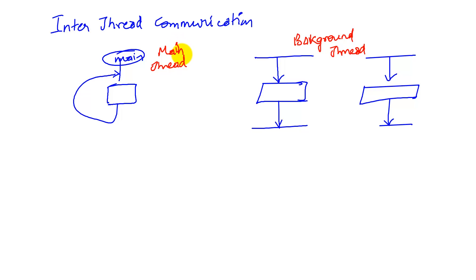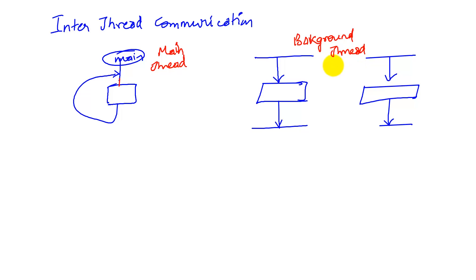We might think we could use something like a local variable or a register to pass information. But we realize that when we do a context switch, all that information is lost because we have a new context. So what can we use to communicate between the two?